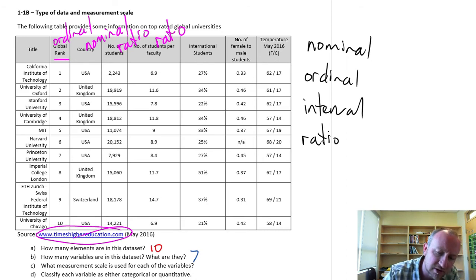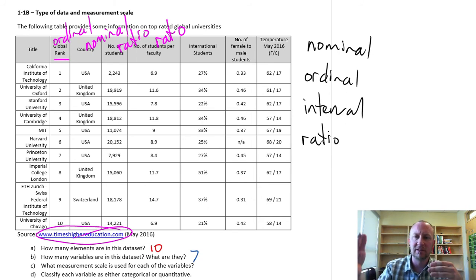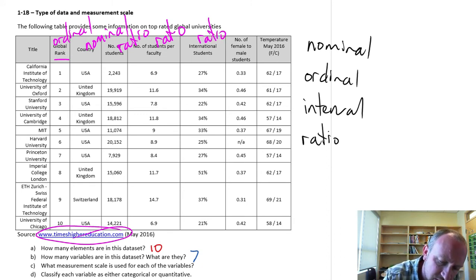So too does number of students per faculty. All the same arguments. This one university has twice as many students per faculty than another university. The difference also has significance. So number of students per faculty is a ratio variable. International students also a ratio variable for the same reasons.